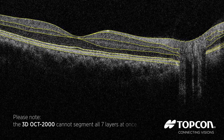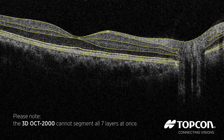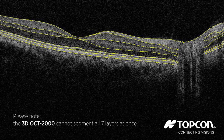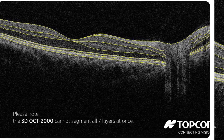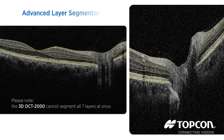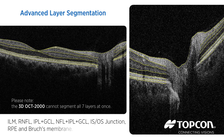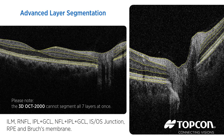TopCon is committed to advancing its current robust segmentation algorithm. Current layers identified include ILM, RNFL, IPL and GCL, NFL and IPL and GCL, ISOS junction, RPE, and Bruch's membrane.